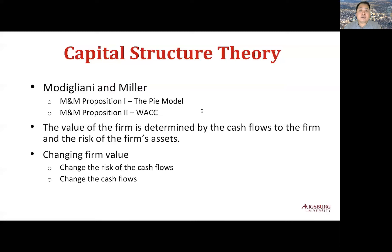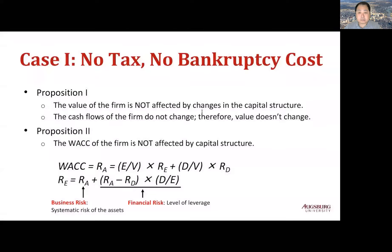First case: let's assume that we don't pay any taxes and there is no bankruptcy. Then it is very clear that a firm's capital structure choice does not make any difference to shareholders' wealth, as seen in the previous example of homemade leverage. There are no cash flows changed by the capital restructuring, so firm value does not change. In addition, WACC does not change either.